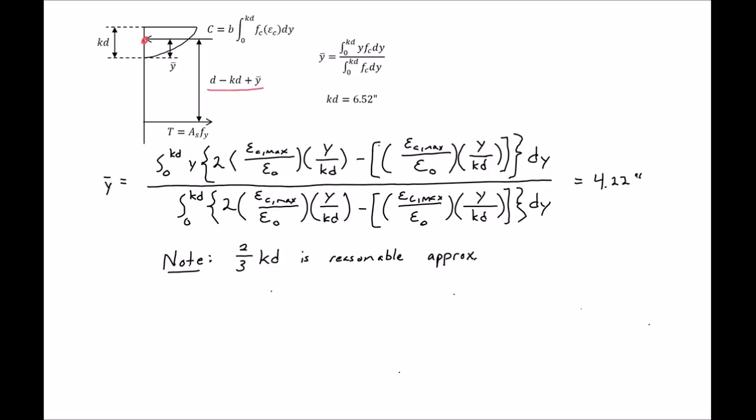Alright, so then we can find our moment. So our moment is just going to be equal to our force, As times Fy, times our lever arm, which in our case our lever arm is D minus KD plus Y bar. So for us, we have our As is 2.37 inches squared, our Fy is 60 Ksi.